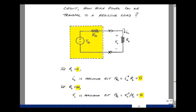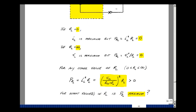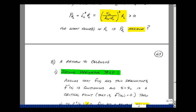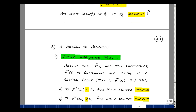Well, how much power is in the load? It's the current squared times R sub L. What's the current? It's this voltage divided by the total resistance, squared, times R sub L. Clearly, when R sub L is zero or infinity, we have no power out. So there must be something in between where we have a non-zero power, because this is not a zero factor. To find the value of R sub L that gives us the maximum power, let's return to calculus — specifically, the second derivative test.